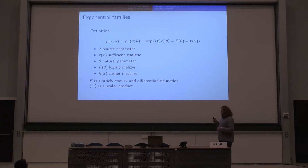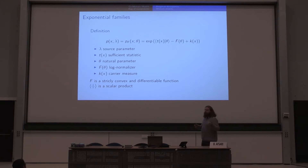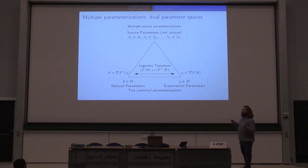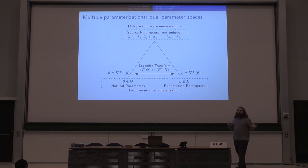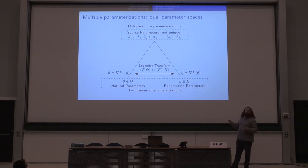My basic object is the exponential family. We have a few notations: T is a sufficient statistic, theta is a natural parameter, and big F is the log normalizer of the exponential family. We have different parameterizations of an exponential family: the source parameters, which are the classical ones — for example mu and sigma for a Gaussian distribution — and two canonical parameterizations: the natural parameters and, in the dual space, the expectation parameter space.